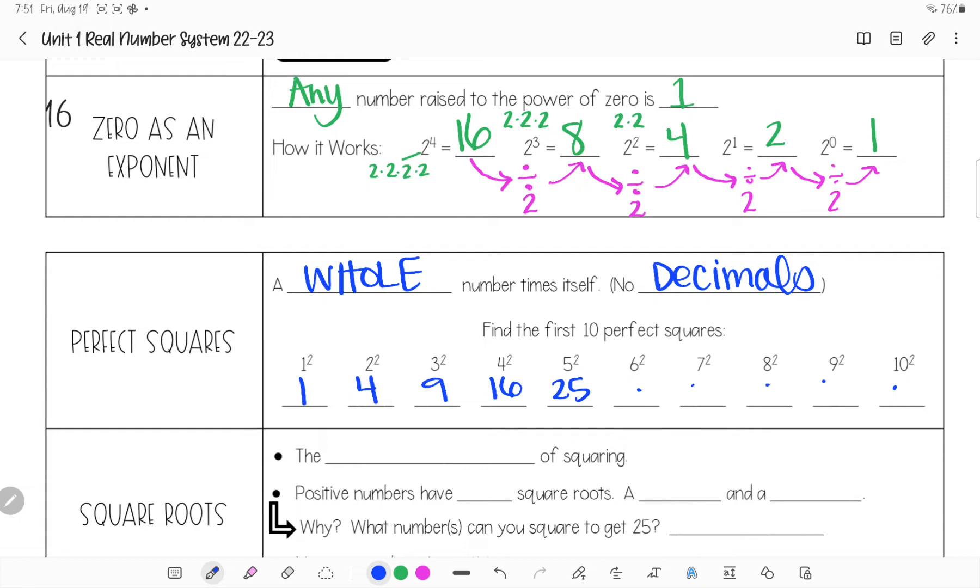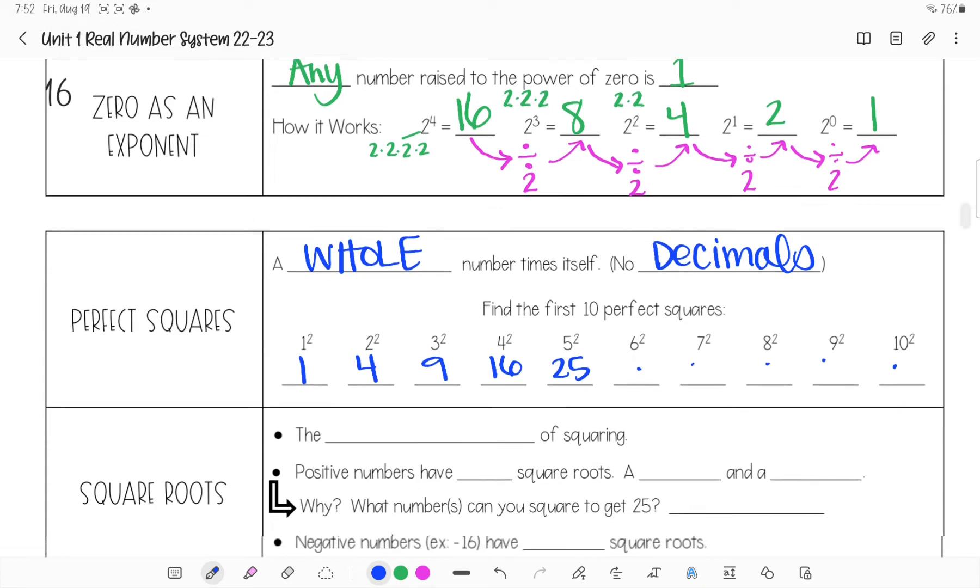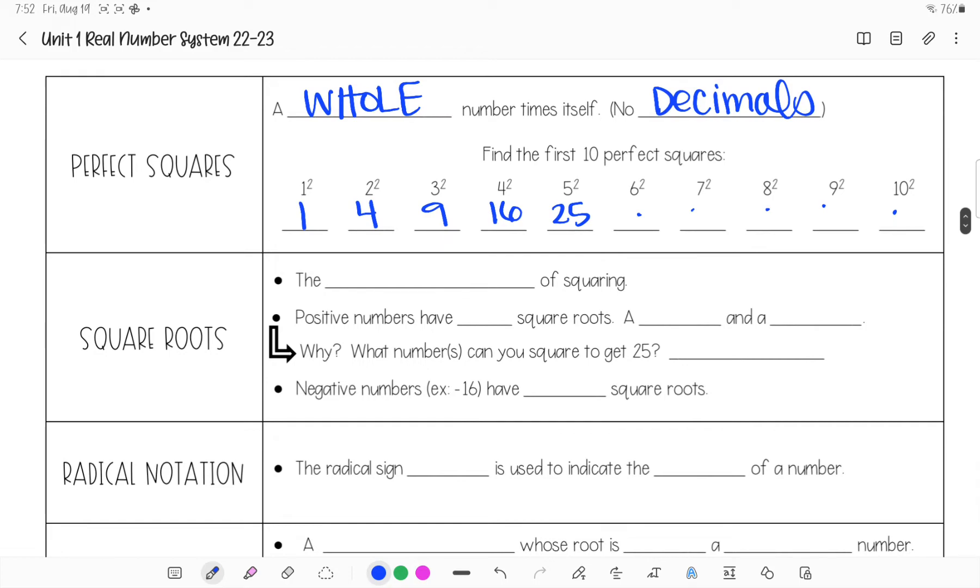And you should be able to fill in the rest of those. I've also given you a reference sheet that had the multiplication chart on it. You should have put it in the front of your binder. And if you did, you'll notice that all your perfect squares were already highlighted on there. And I've done the first 13. All right, so now a square root is the opposite of squaring. So to square something means to times it by itself. To square root something means what number did I times by itself to get that. So this is the opposite of squaring.